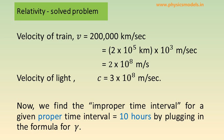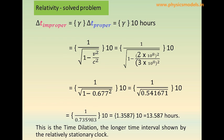We convert the velocity of the train as 2 × 10⁸ meters per second, in line with the way the velocity of light is expressed as 3 × 10⁸ meters per second. Now we can calculate the improper time interval by plugging into the formula for gamma. We substitute into the equation: delta T proper is 10 hours, and gamma is 1 divided by the square root of 1 minus v squared by c squared.